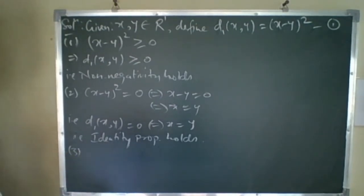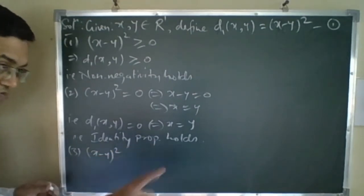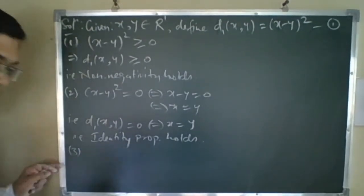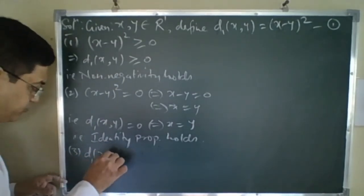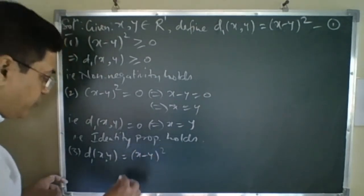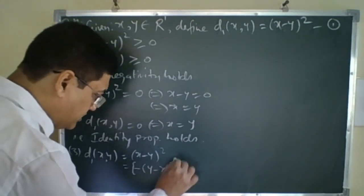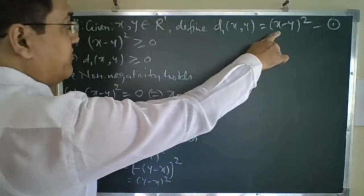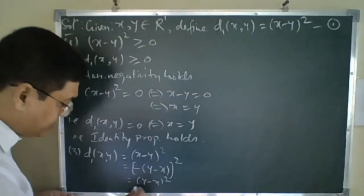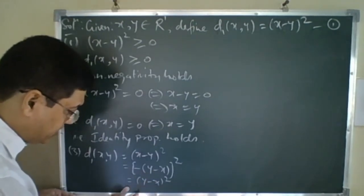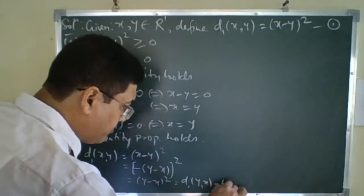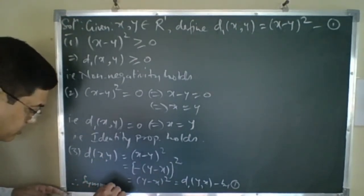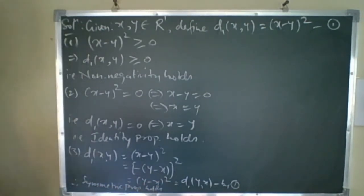Now let us see the third property — symmetry. d1(x,y) = (x−y)². This can be written as (−1)²(y−x)² = (y−x)² = d1(y,x). So d1(x,y) = d1(y,x). Therefore symmetric property holds.